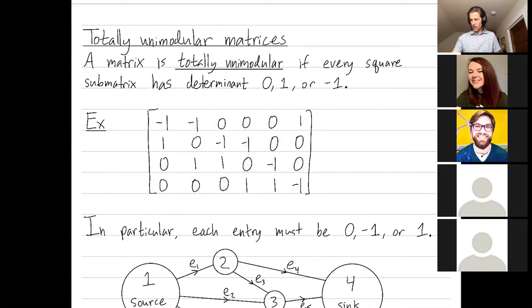Maybe I just cut off two columns, and I have a square 4x4 matrix. That determinant has to be 0, 1, or negative 1.